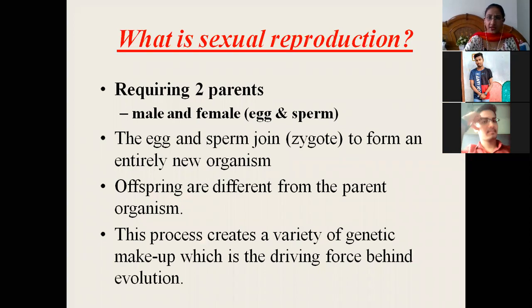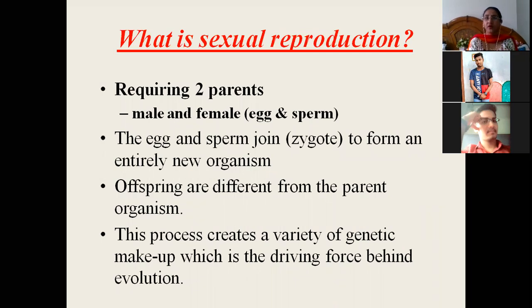What is sexual reproduction? It requires two parents — a male and a female. There is a fusion of egg and sperm to form the zygote. The sperm from the male and egg from the female join to form the zygote, and that zygote differentiates into an entirely new organism.